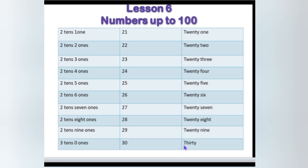Please spell 30: T, H, I, R, G, Y — 30. In 30, how many tens are there? 3 tens, 0 ones. 3 tens and 0 ones make 30.